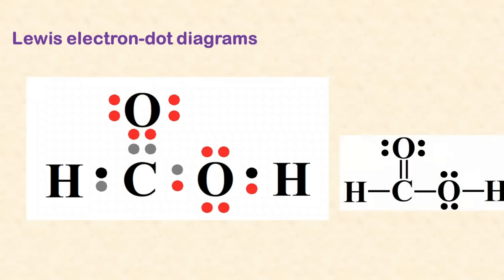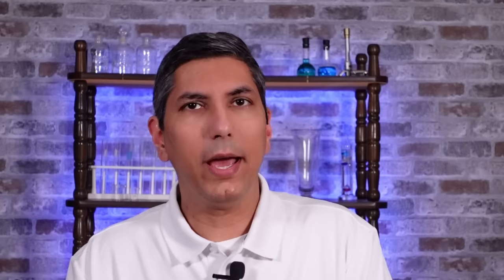Lewis electron dot diagrams help us visualize the shapes of molecules. Each atom has a certain number of valence electrons, and we have to draw every one of those in the diagram. There are exceptions, but we try to arrange these so every atom has eight valence electrons, creating double or even triple bonds if we have to.